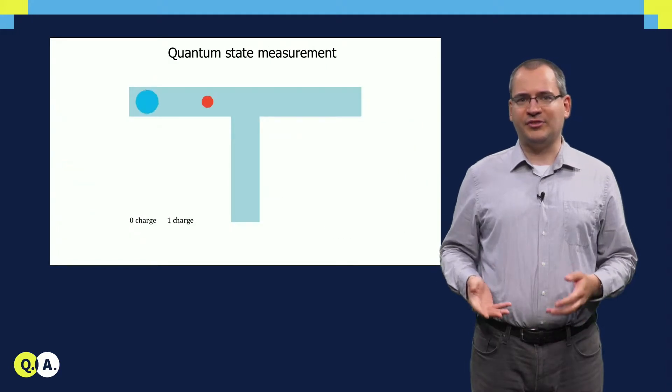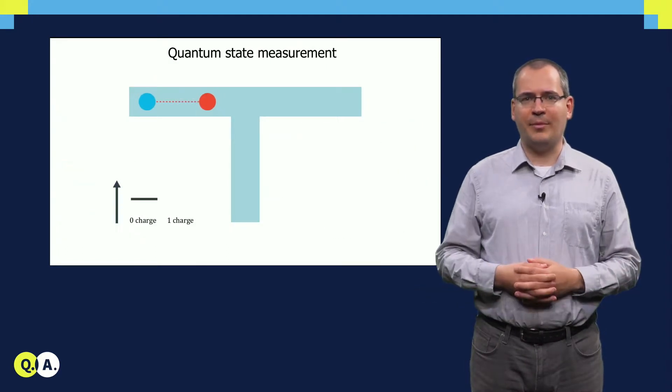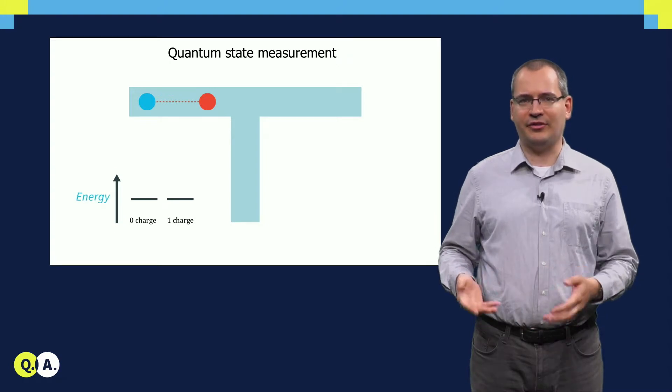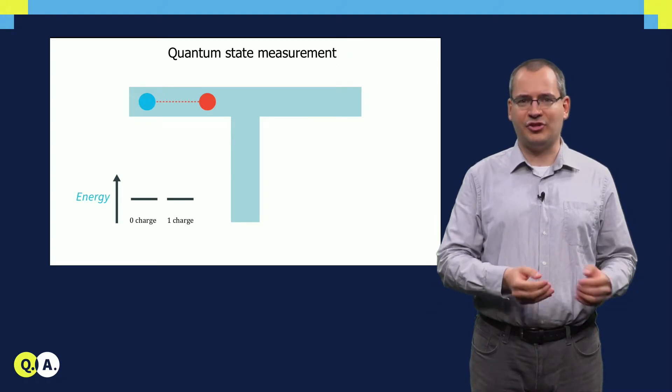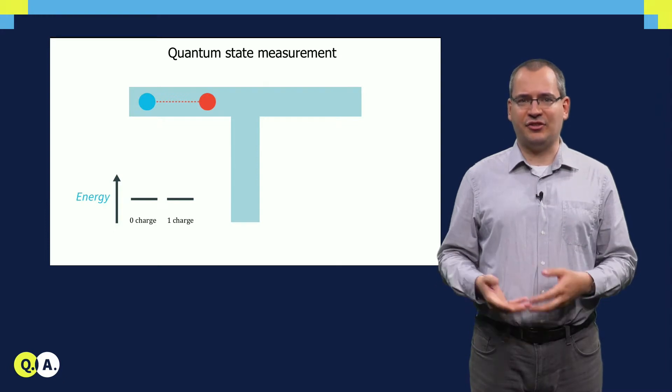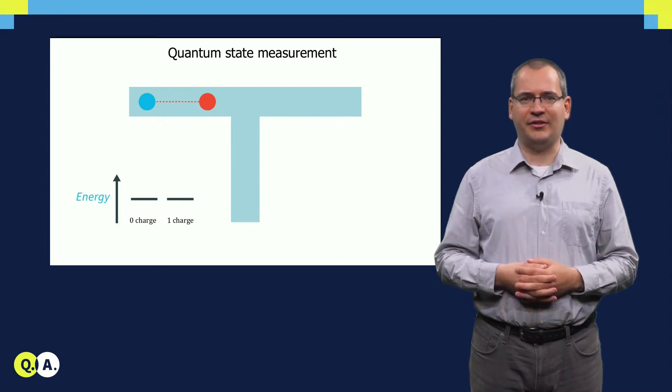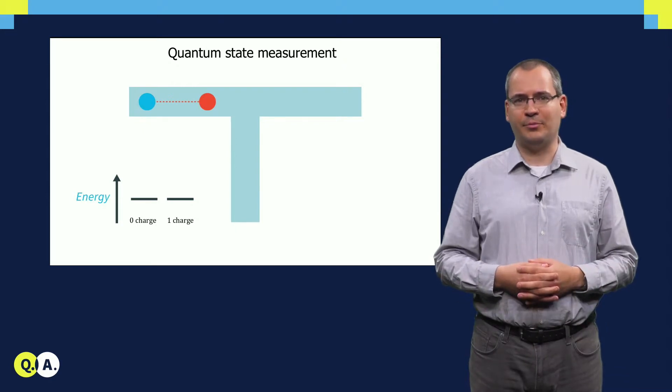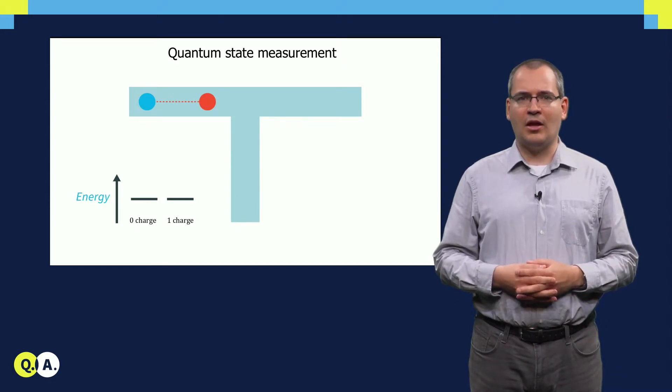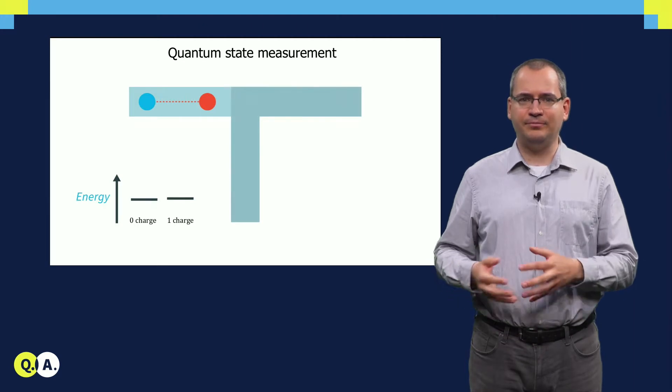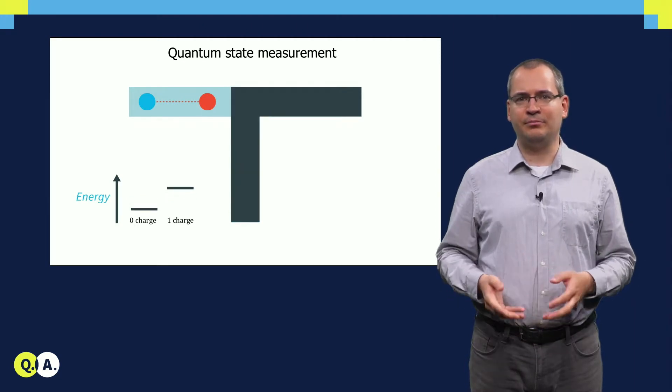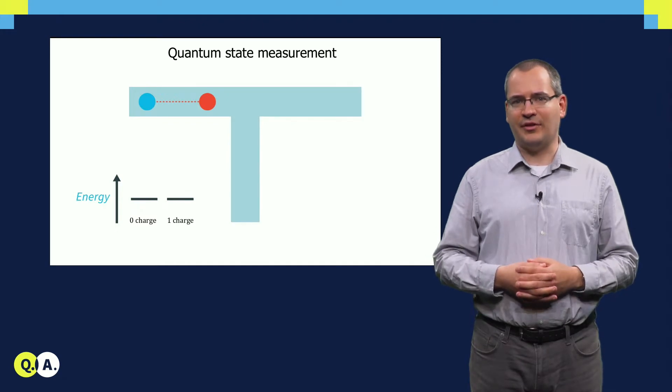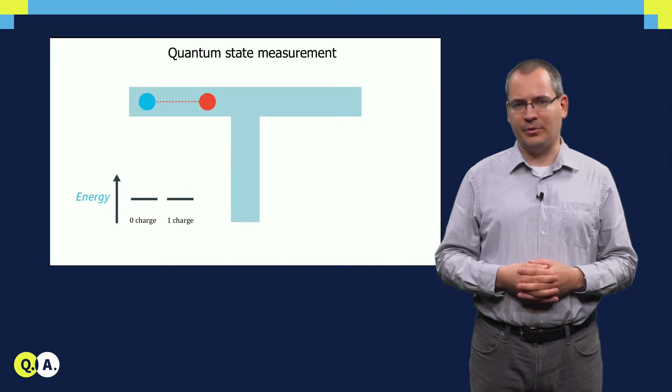Let's go on to the quantum state measurement in this scheme. Remember that the pair of Majorana states encode either zero electron or one electron charge, and these states are degenerate, that is they are at the same energy level. If we want to distinguish between them, we have to break this degeneracy. If we close the rest of the nanowire, the two states split off because of the charging energy of the system, just like for quantum dots built for spin qubits.